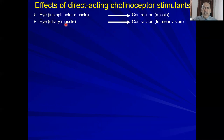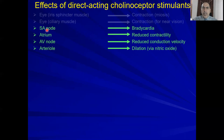In the heart — note that the parasympathetic nervous system has little or no effect on the ventricle, acting mainly on the atrium. On the SA node (pacemaker), they cause bradycardia. On the atrium, they reduce contraction. On the AV node, they reduce conduction velocity. Because of these effects combined, they cause bradycardia.